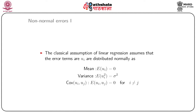Since we assume the mean value or expectation of Ui equals zero, we also assume the covariance of Ui and Uj equals zero for i not equal to j. This covariance of Ui and Uj being zero asserts the assumption of no autocorrelation between serial error terms.